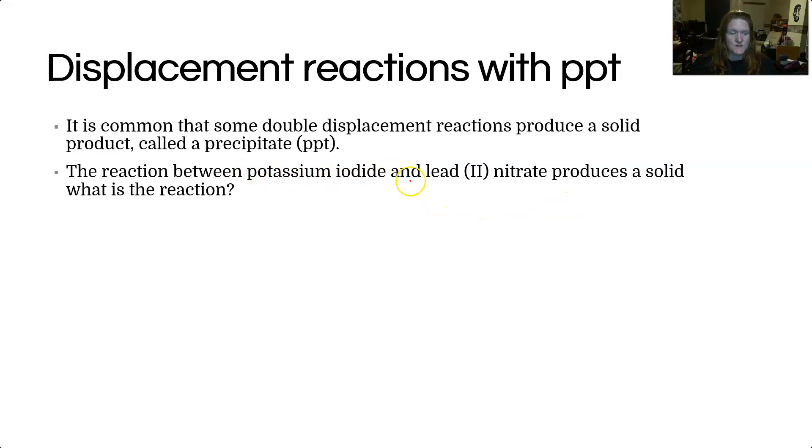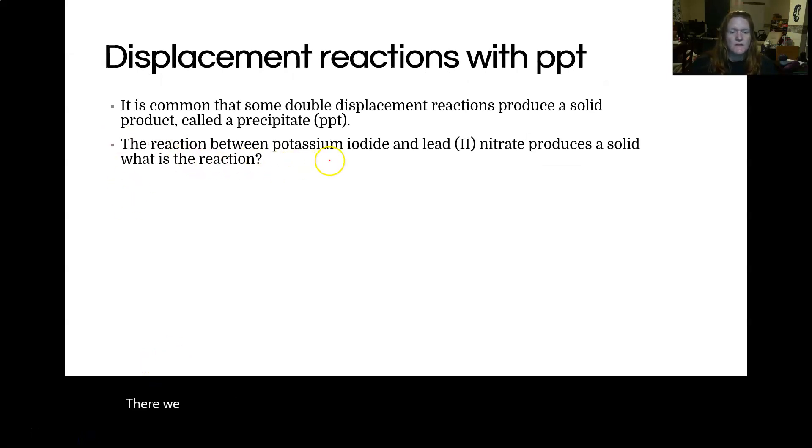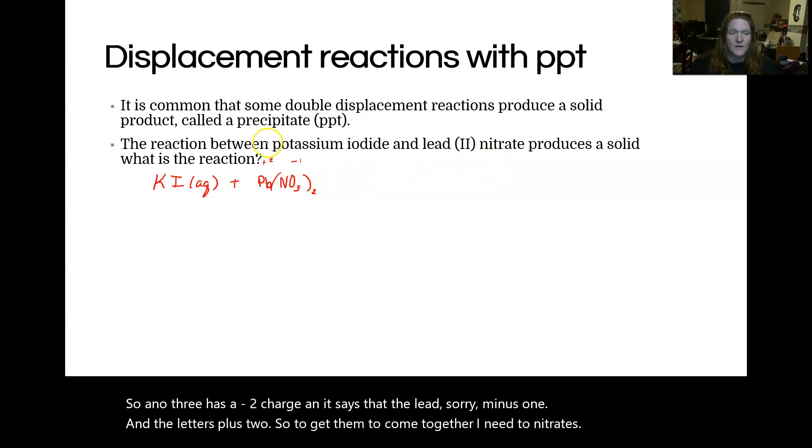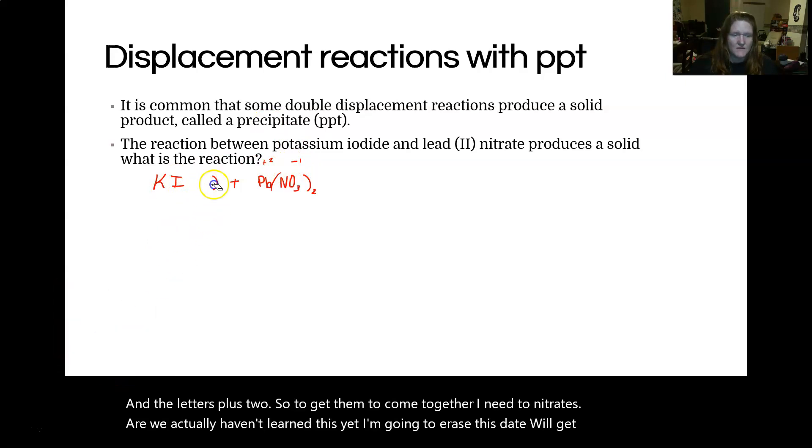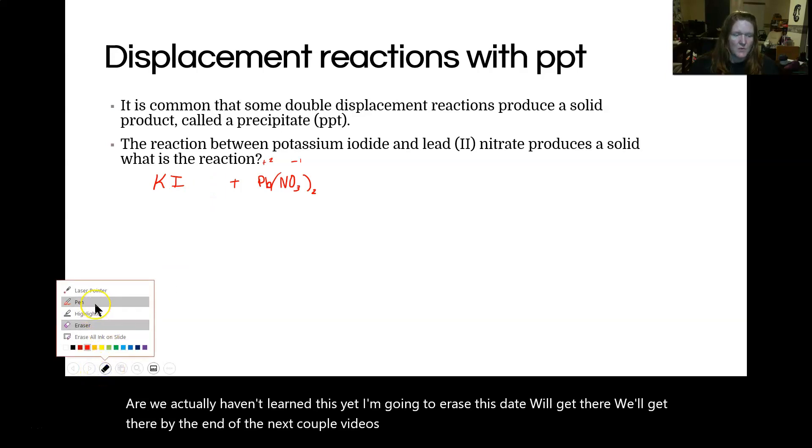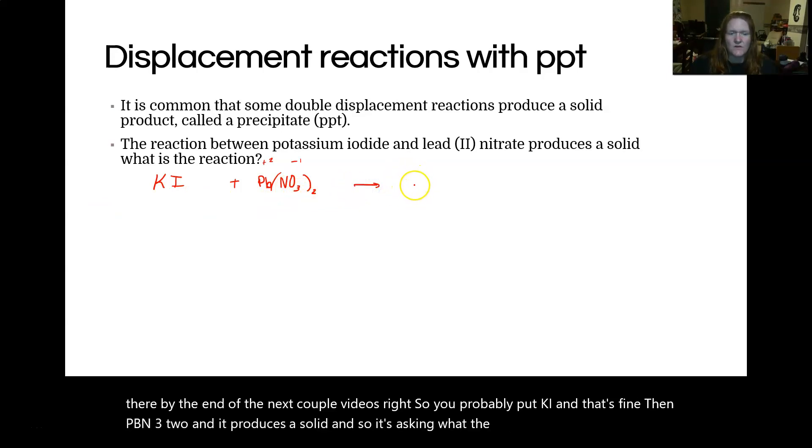So we should be able to write these reactions at this point. You should pause it and try it out. So you should be able to write these reactions by now, pause it and give it a try, and then come back to me and see what I do. So NO3 has a minus one charge and the lead is plus two. So to get them to come together, I need two nitrates. We actually haven't learned this yet, we'll get there by the end of the next couple of videos. So you probably put KI and that's fine. Then Pb(NO3)2 and it produces a solid. So it's asking what the solid is. What is the reaction? How do you know what the solid is?